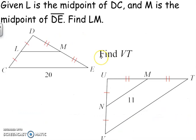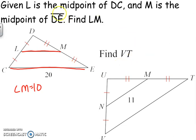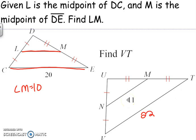Given that L is the midpoint of DC and M is the midpoint of DE, find LM. LM is going to be half of the third side, so LM is going to be 10. Yes, it is that simple. Now find VT — it's going to be double the length of 11, so it's going to be 22.